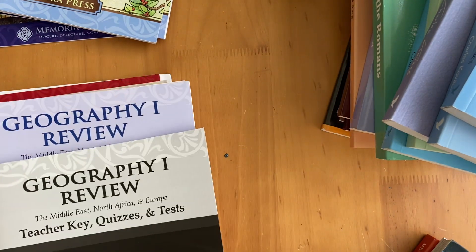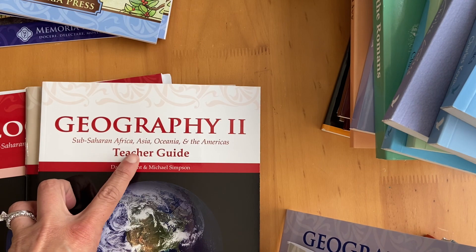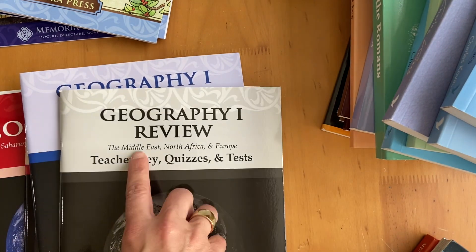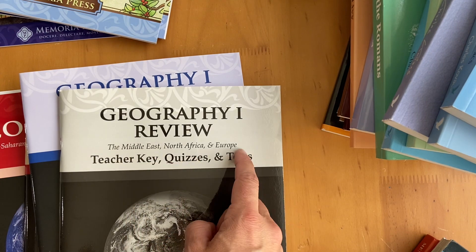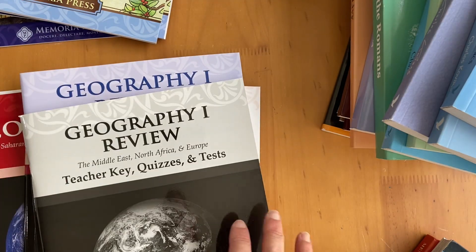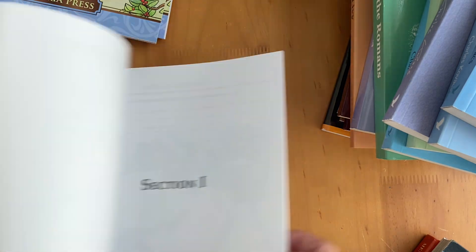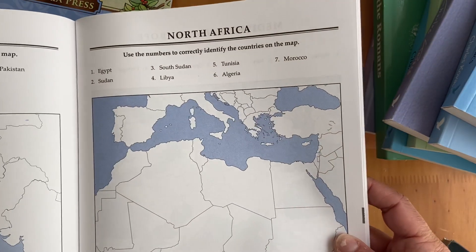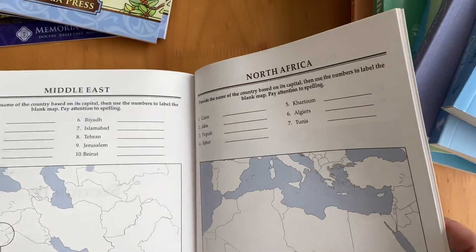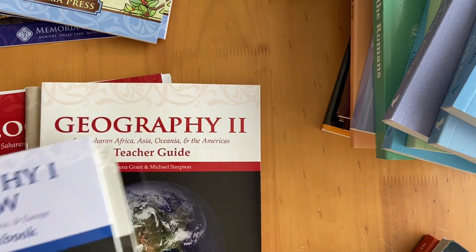Then I got him Geography 2, which covers Sub-Saharan Africa, Asia, and Oceania and the Americas. And with the Geography 1 review — which he did this year, covering Middle East, North Africa, and Europe — this is the teacher's key and this is the student rubric. You start with this and review what you did last year, labeling maps of North Africa. It's not very thick, so it shouldn't take too long.